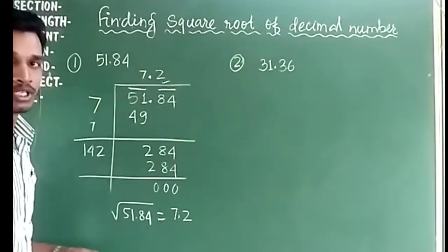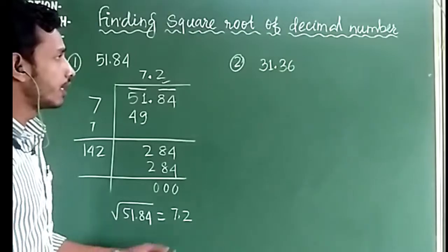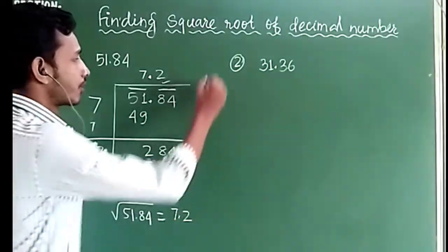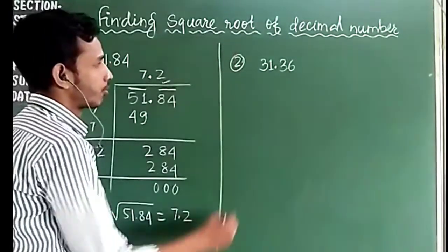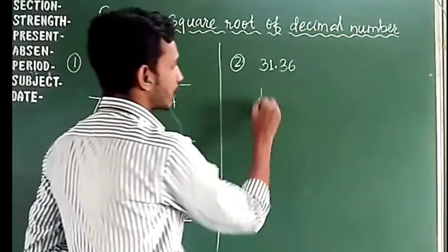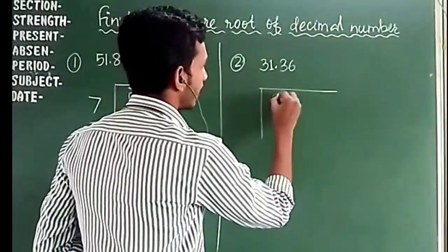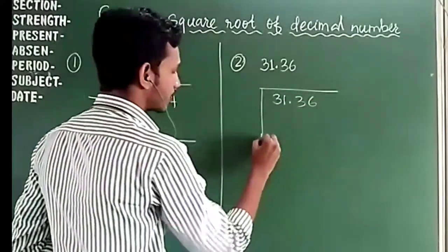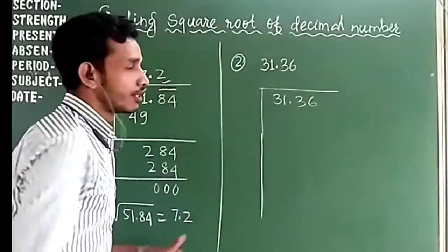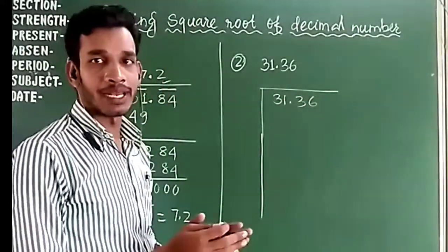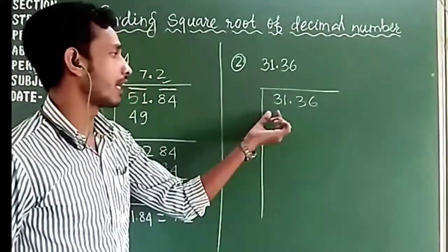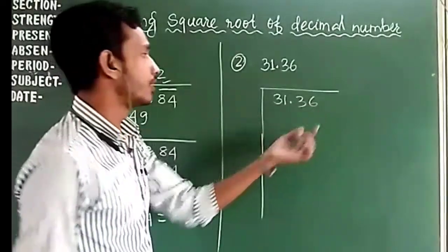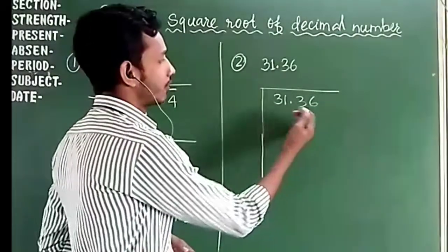So √51.84 = 7.2. Let's see one more example. Here we have 31.36. We will make groups for the whole part and the decimal part, starting with the pair.